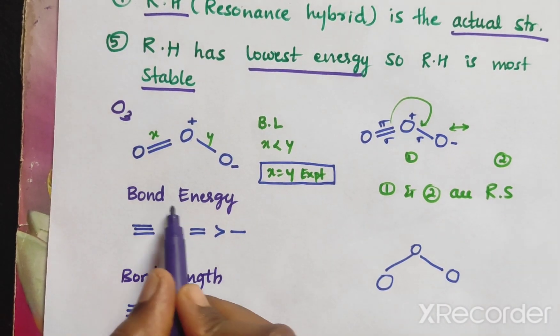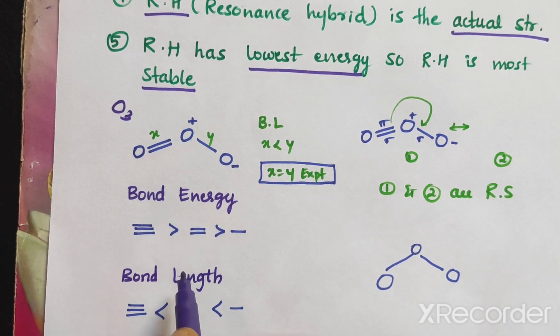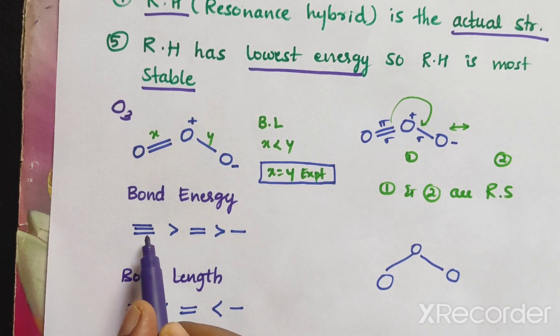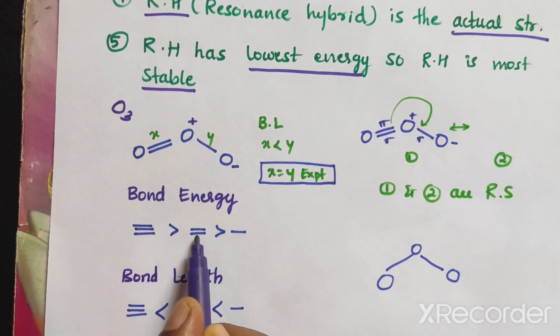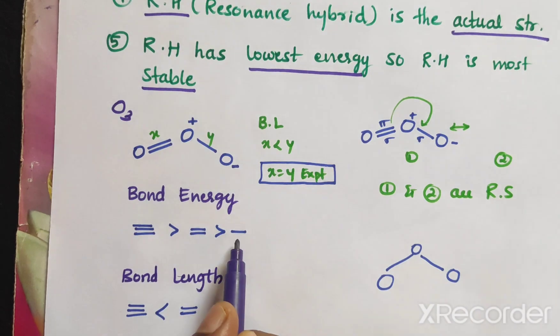Bond length and bond energy are opposite to each other. Triple bond energy is more than double bond, and double bond energy is more than single bond.